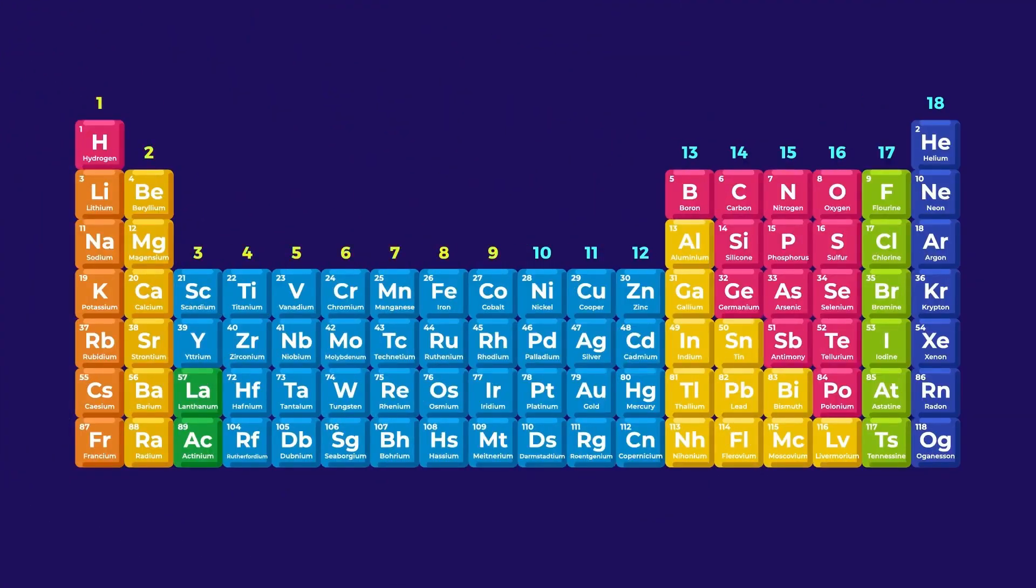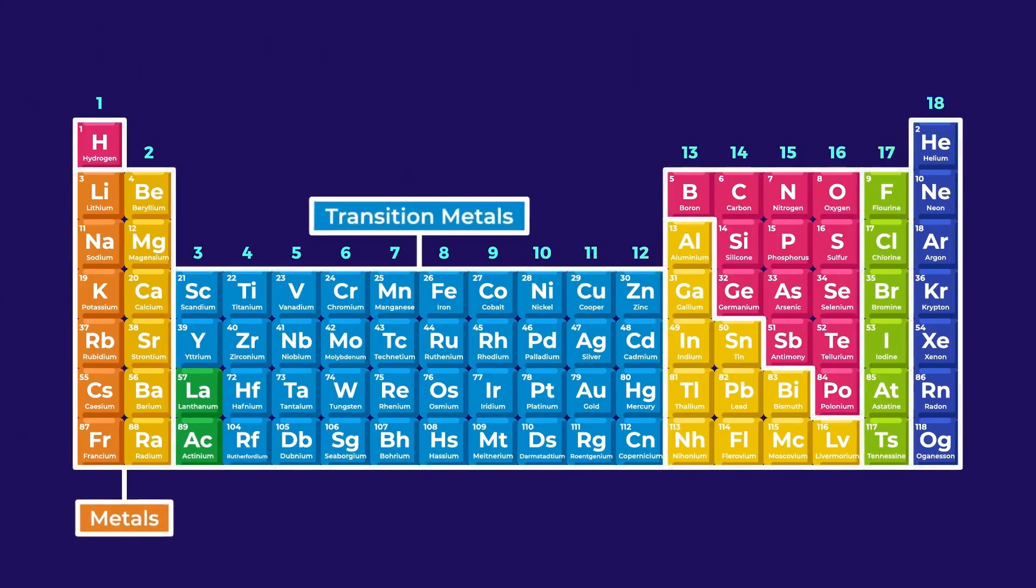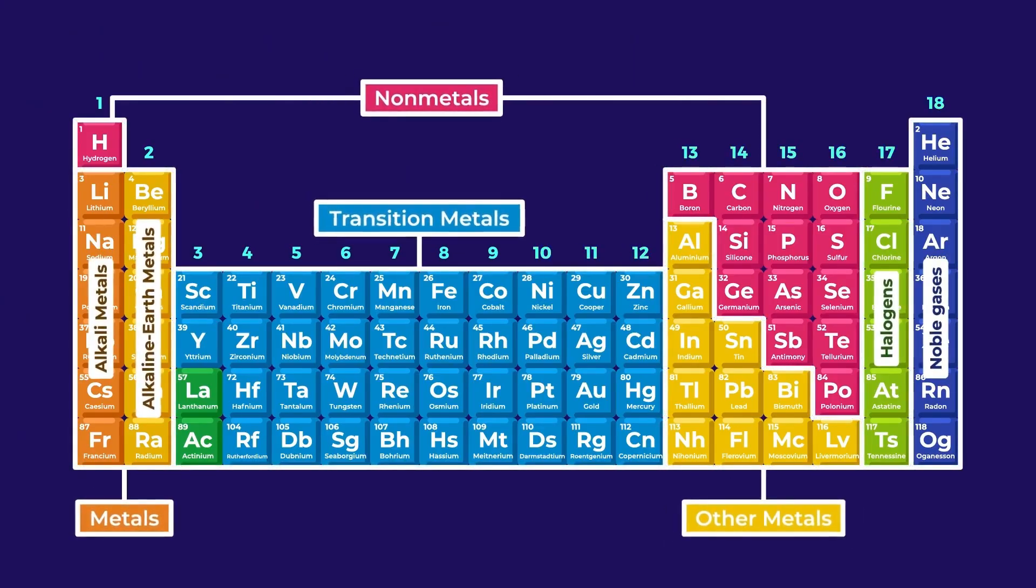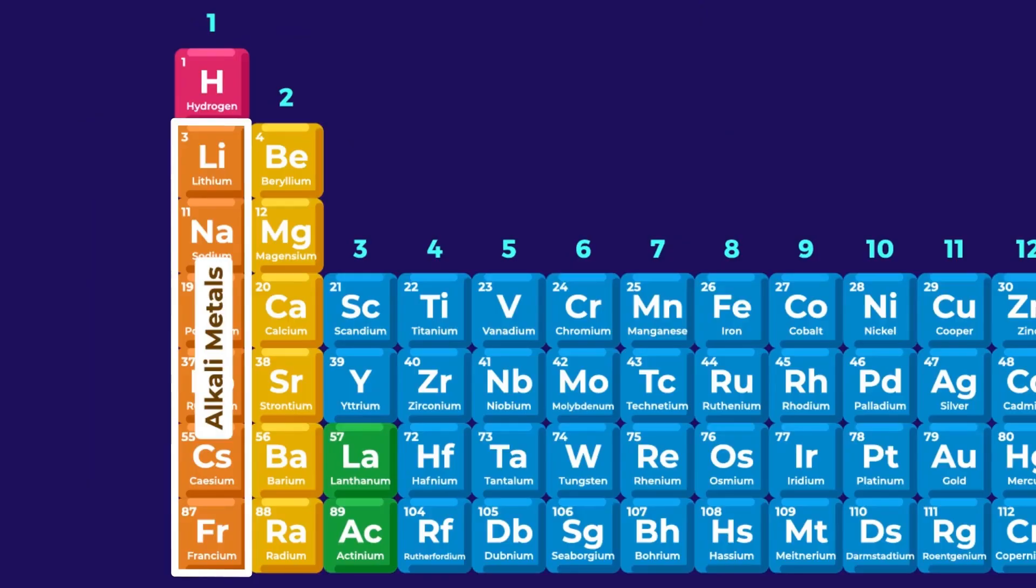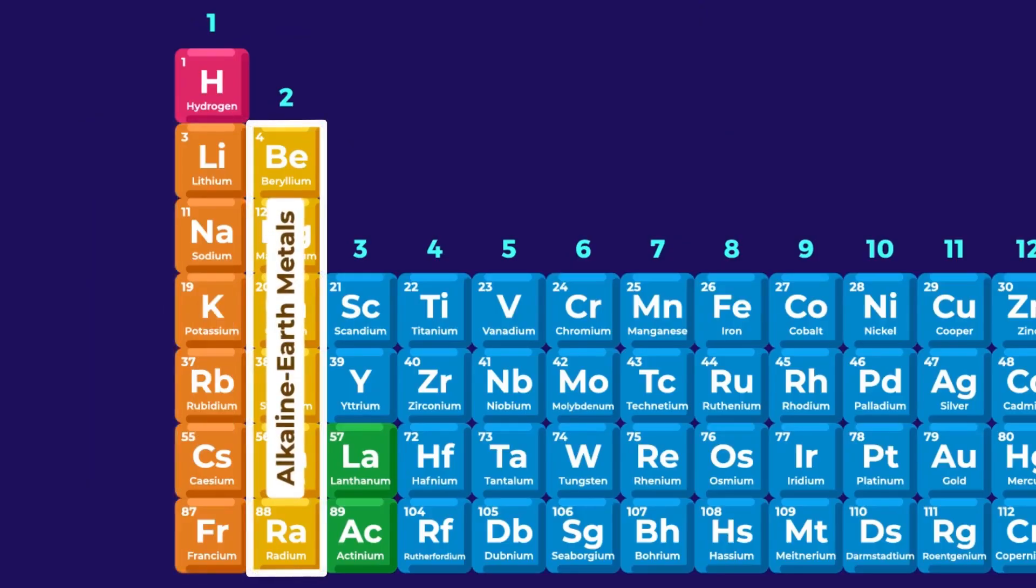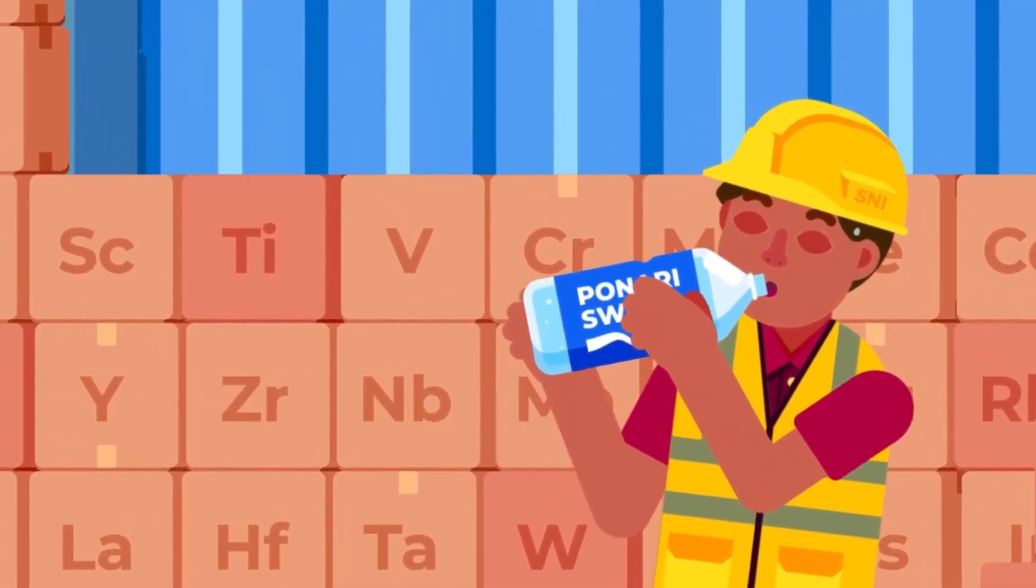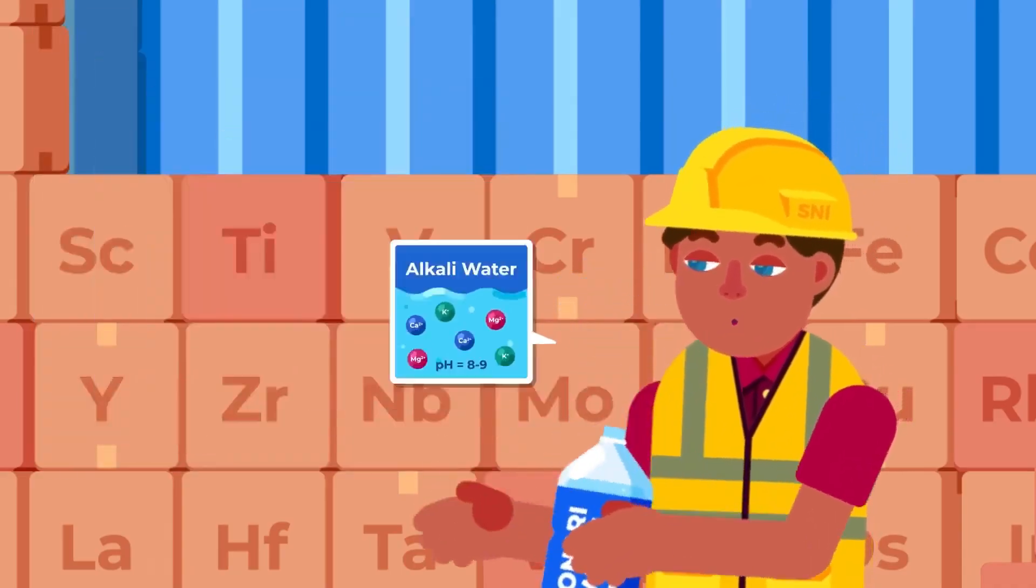The classification from the left column, or group 1, to right, group 18, also informs us about each group's specific properties and their names. Group 1 are called alkali metals, and group 2 alkaline earth metals. They are called alkali because they create an alkali solution when reacting with water.